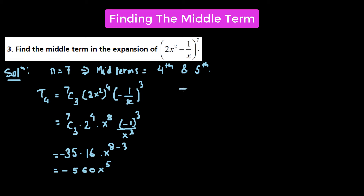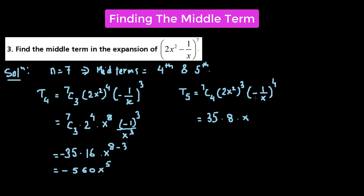For T5: 7C4 times (2x²)³, times (−1/x)⁴, which equals 7C4 = 35, times 2³ = 8, times x^(2×3) = x⁶, times (−1)⁴, divided by x⁴. So 35 × 8 = 280, and (−1)⁴ = positive 1, and x^(6−4) = x². So T5 = 280x². These are the two middle terms for this expression.